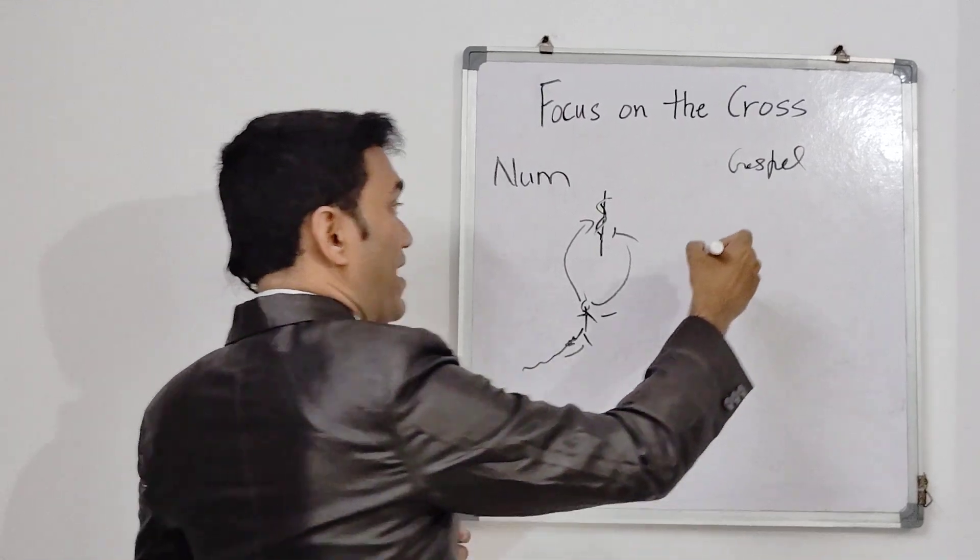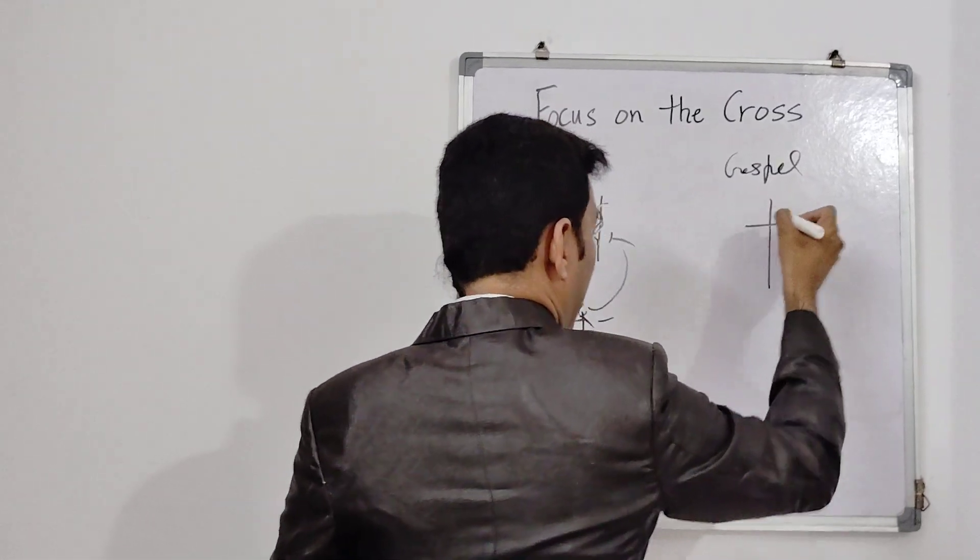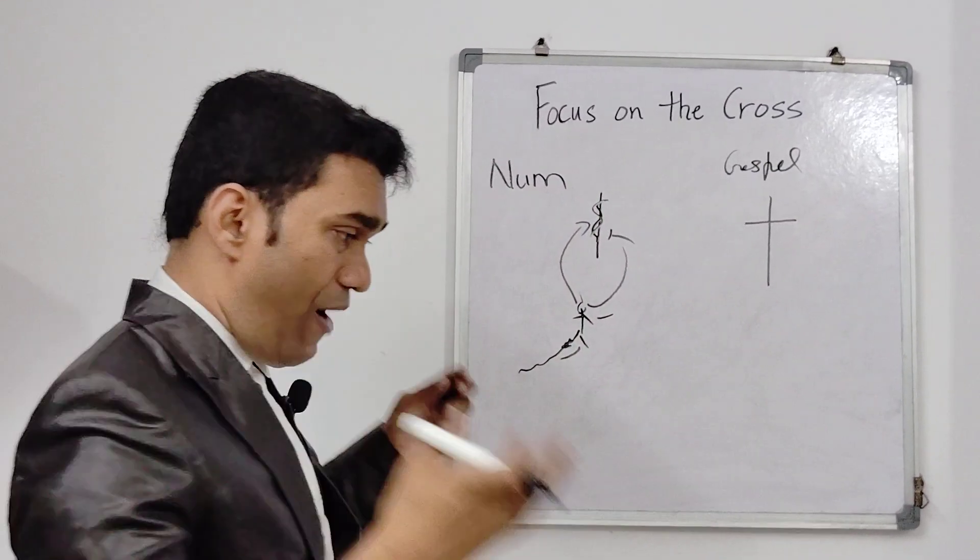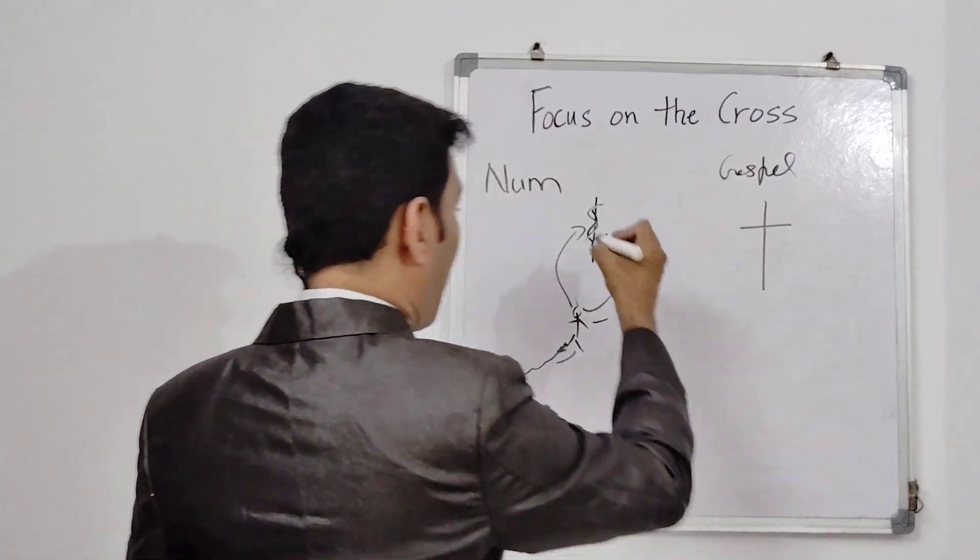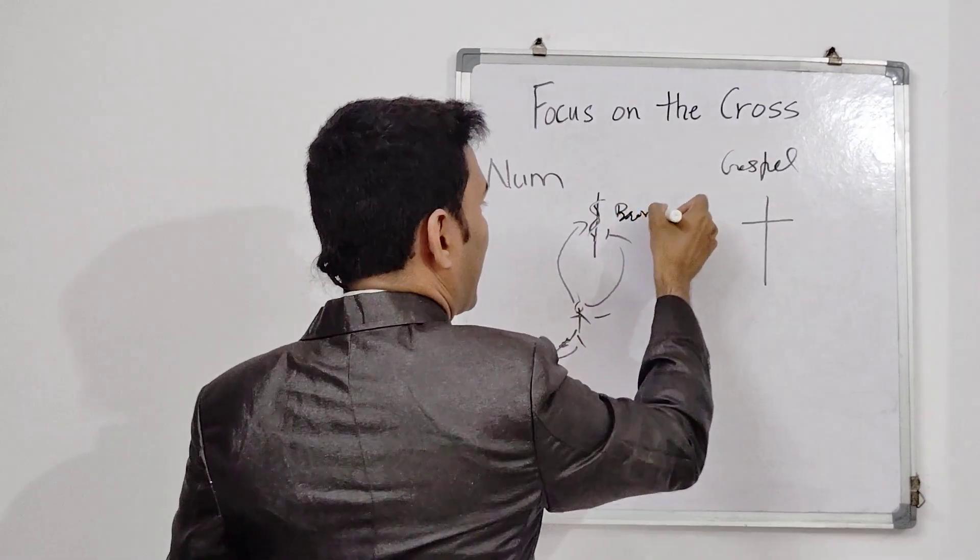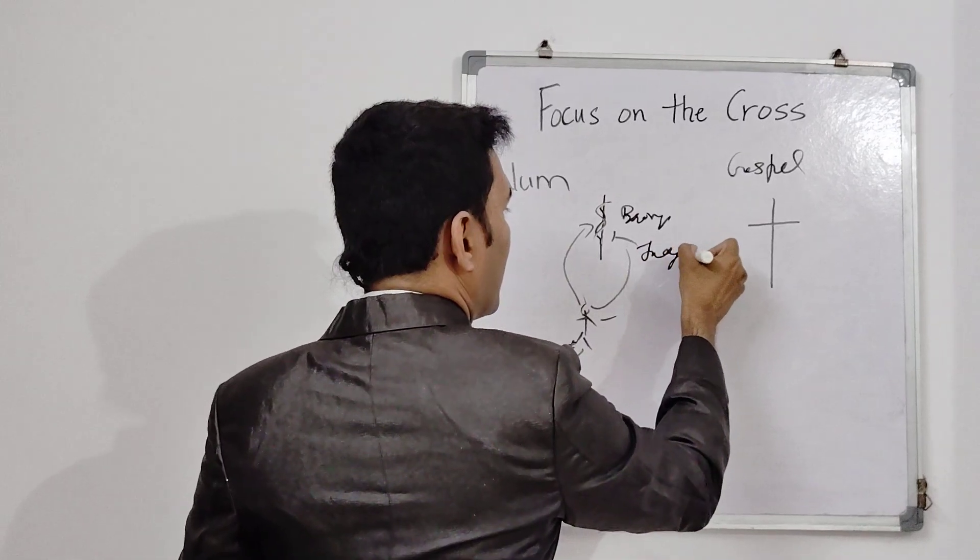Wow, I like this thing. So whenever we speak about the cross, Jesus on the cross. You know, wow. Why is this so important for us? Why is it something like bronze? Bronze actually represents judgment. Judgment.